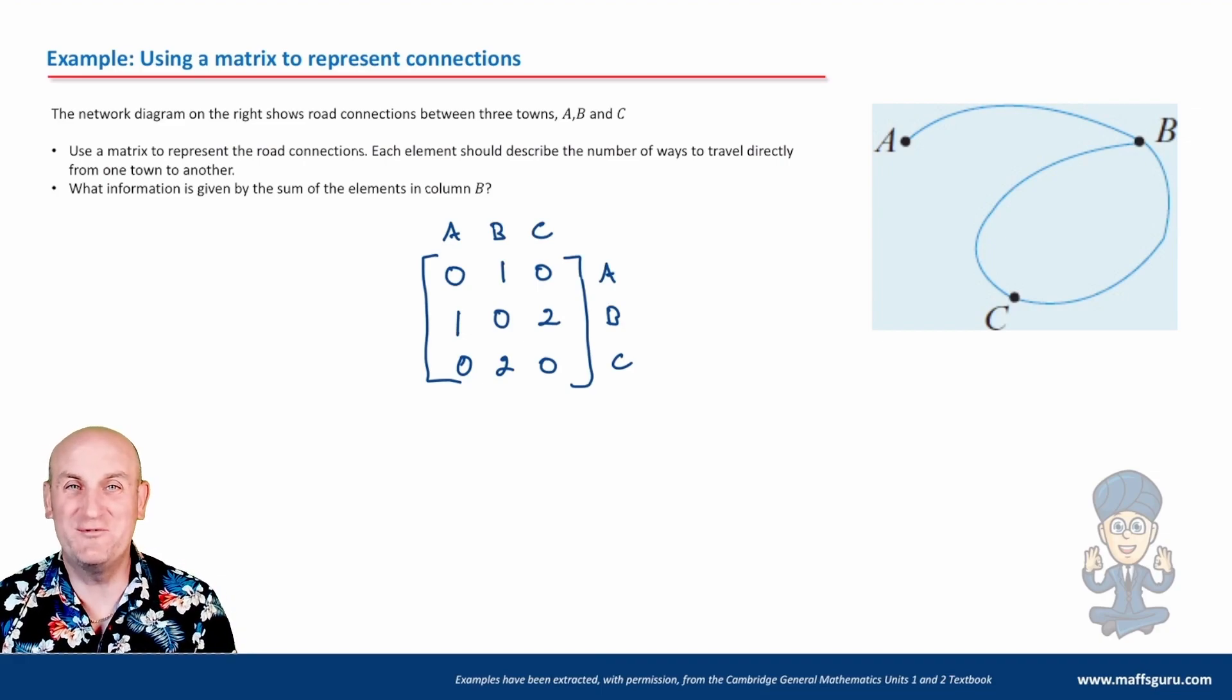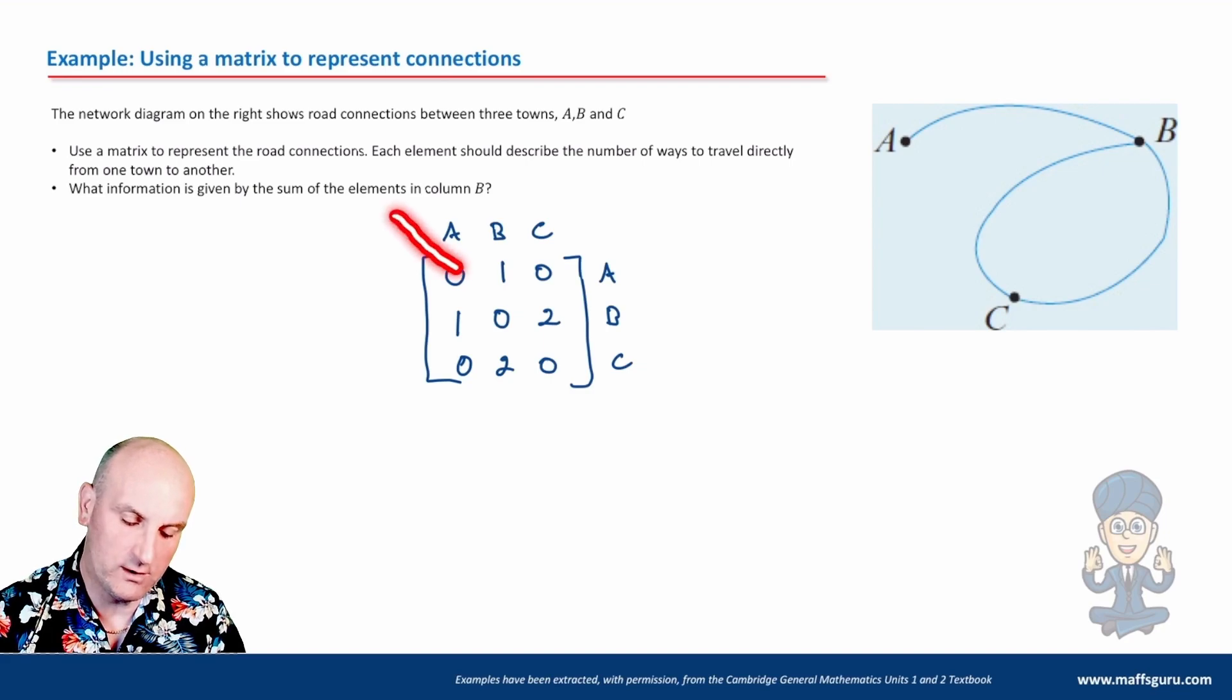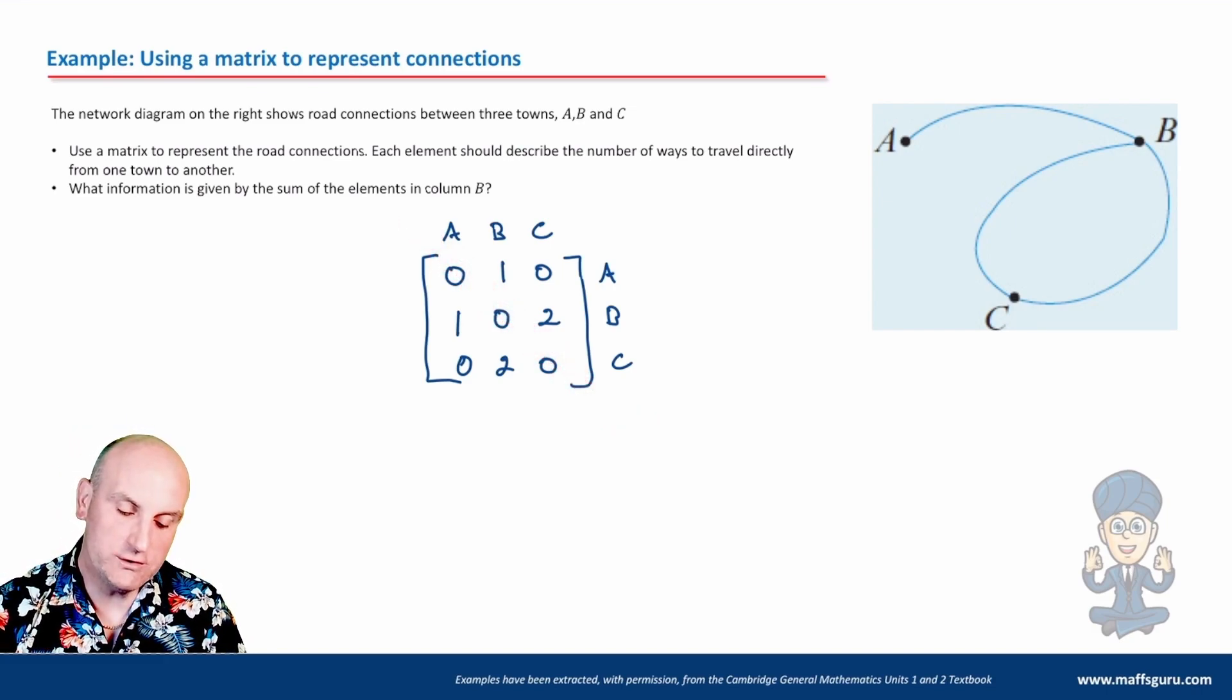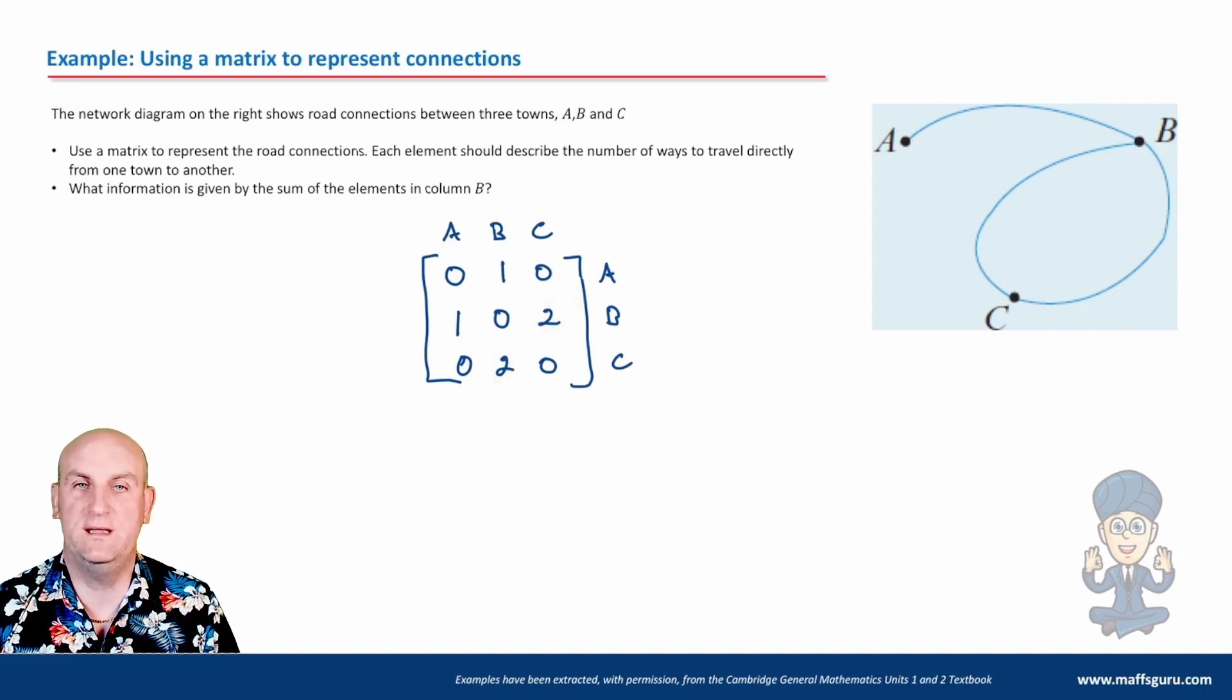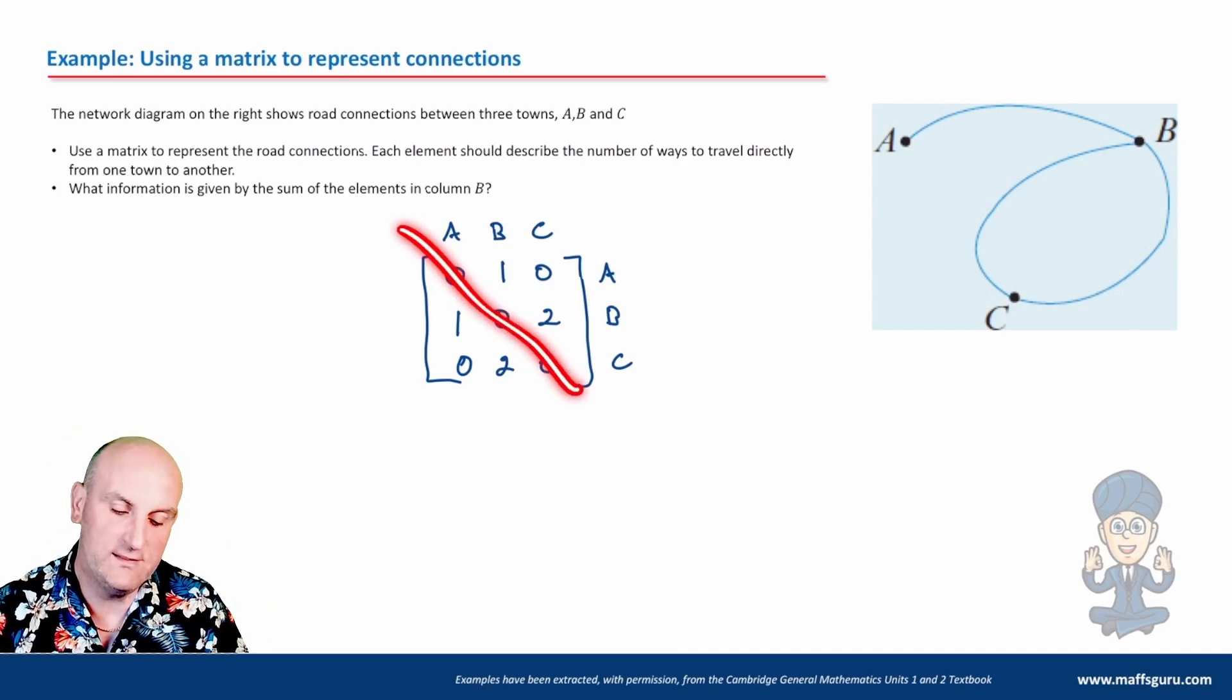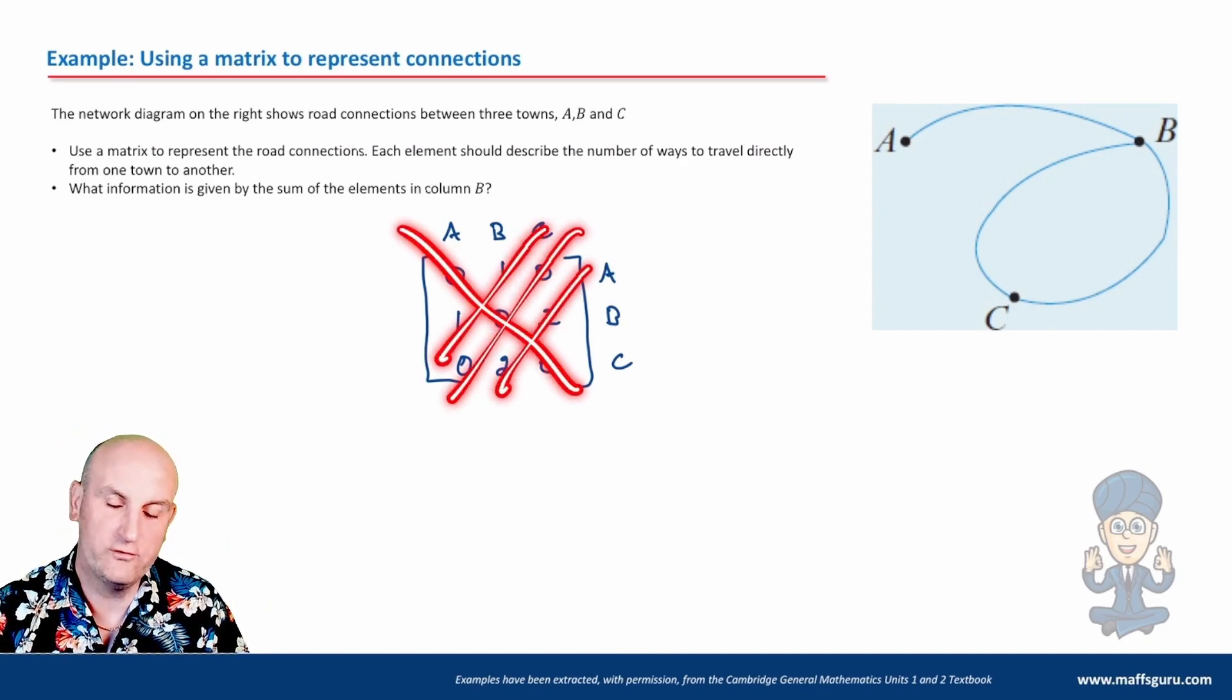And what do we notice? We've got a matrix. And even more importantly, is if I draw a line through here, hopefully what you notice is one, zero, two, one, zero, two. In fact, this matrix is symmetric. The reason being is, if I've got two connections between C and B that way, I must have two connections between B and C. They're just reversing the letters. So hopefully, whenever we create these things, we can see that they are also symmetrical.